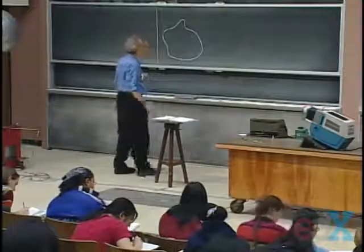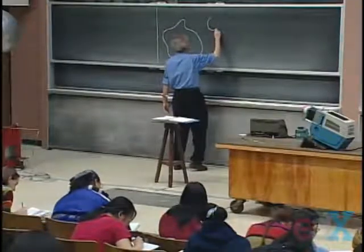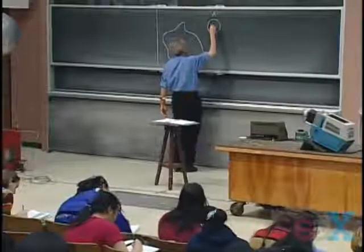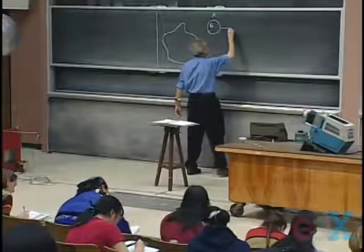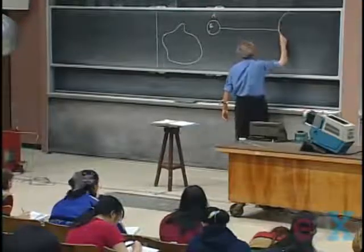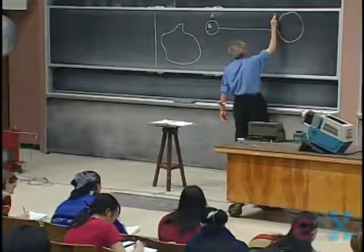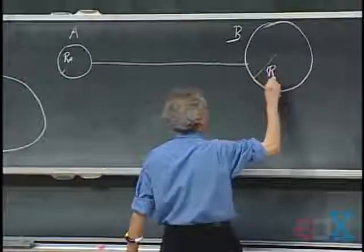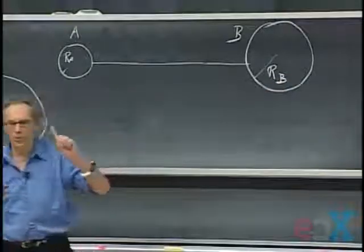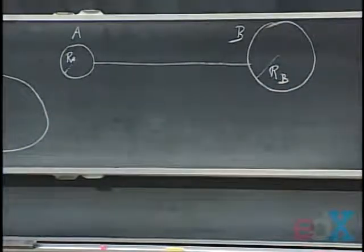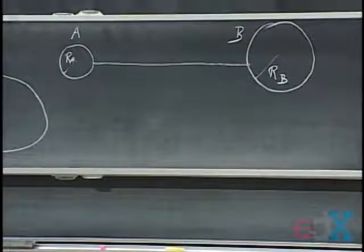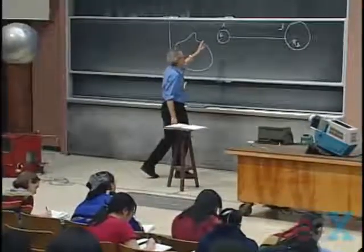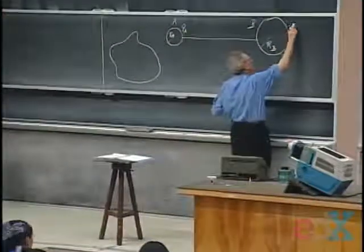The way I want to approach that is as follows. Suppose I have a solid conductor A with radius R_A, and very far away — maybe tens of meters away — I have a solid conductor B with radius R_B. They are connected through a conducting wire, which is essential. If they are connected through a conducting wire, then it's equipotential — they all have the same potential. I'm going to charge them up, getting charge Q_A here and Q_B there.